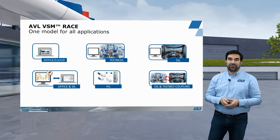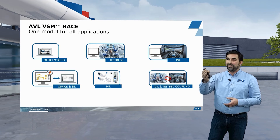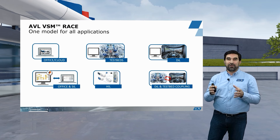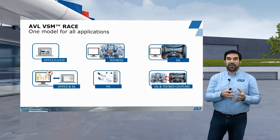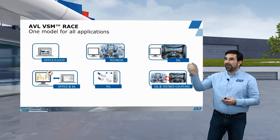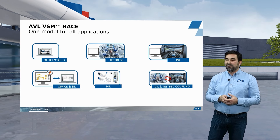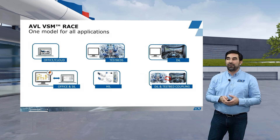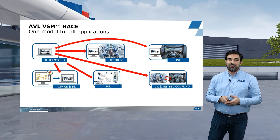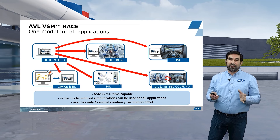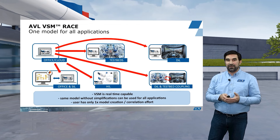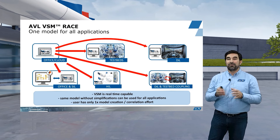This slide shows the various applications of AVL VSM Race software. Typically you start at the top left, which is the office or cloud application — this is where you correlate the model, build it up, and make sure what you see in simulation matches reality. Once you have done that, you can use VSM for many other purposes: on testbeds, on the driving simulator, for software-in-the-loop applications, hardware-in-the-loop applications, and also for the DIL and testbed coupling, a speciality of AVL. The key message is that once you have set up and correlated your model in the offline environment, you can simply transfer that model to all other applications without needing to modify or simplify it. VSM is always real-time capable — no matter the degree of complexity, you can always use the same model for all different applications. On the user side, you only have a one-time effort to create and correlate the model.